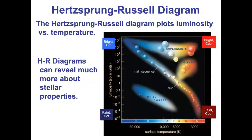When the process of measuring luminosity and temperature really got off the ground in the early 20th century, the first two major scientists were Hertzsprung and Russell. They compared their notes and started graphing the luminosity of stars versus their temperatures to create what came to be known as the Hertzsprung-Russell diagram, or the HR diagram for short.